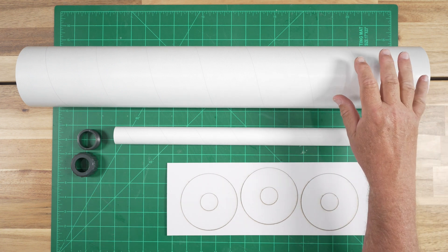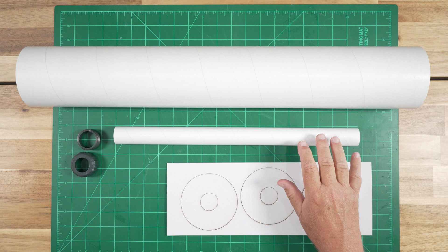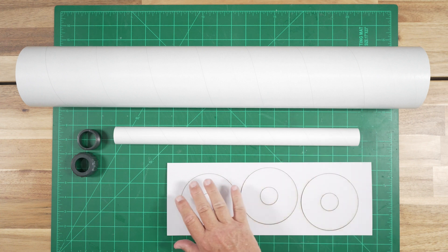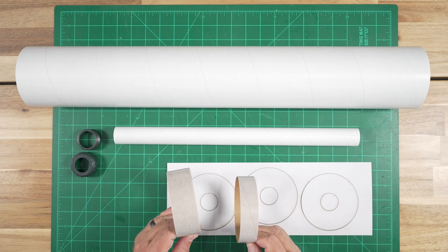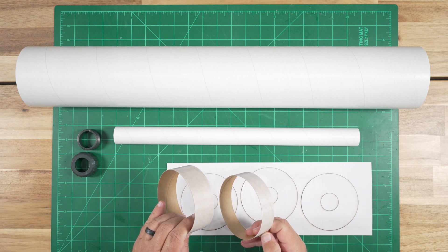For this step, we'll need our main airframe tube, our 29mm motor mount tube, the centering ring set, and the shorter of the two accessory tubes provided in the kit.